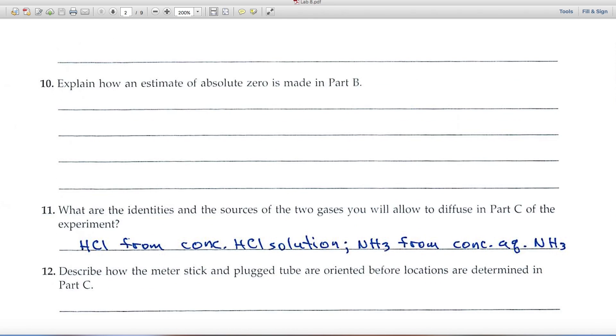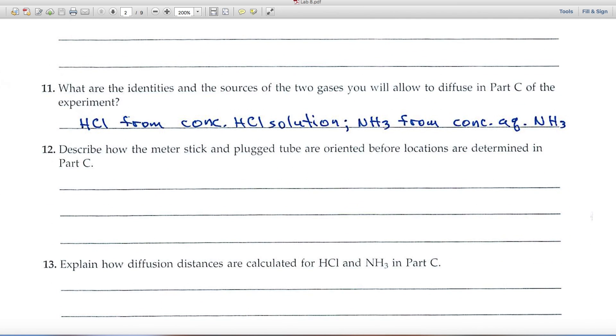The rest of these questions are pretty straightforward. I've given you some tips on number eleven. It says, what are the identities and sources of the two gases you will allow to diffuse in part C of the experiment?